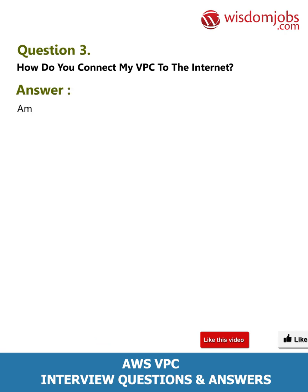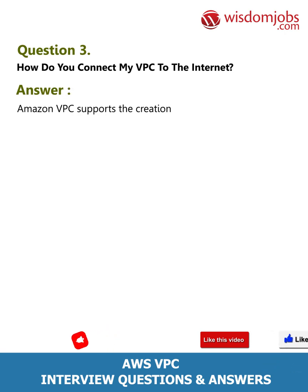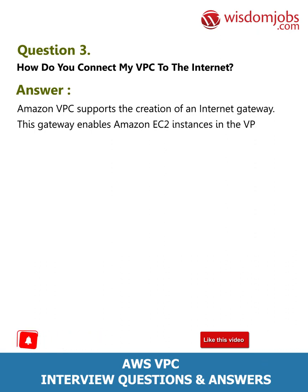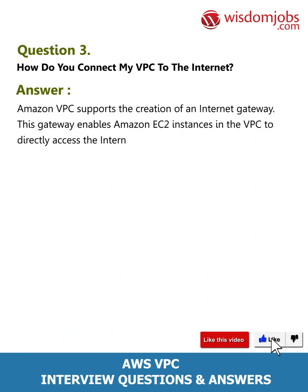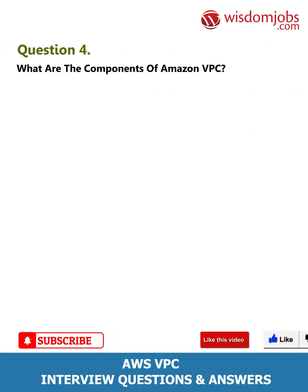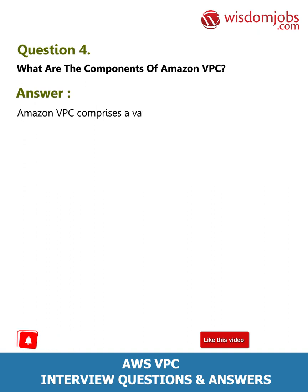Question 3: How do you connect my VPC to the internet? Answer: Amazon VPC supports the creation of an internet gateway. This gateway enables Amazon EC2 instances in the VPC to directly access the internet.